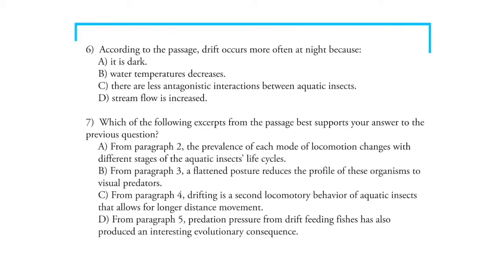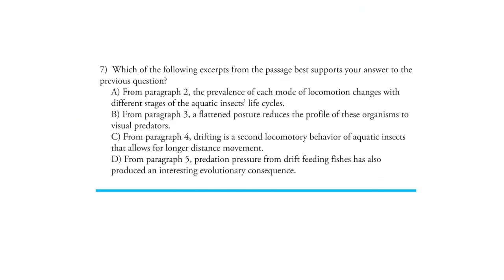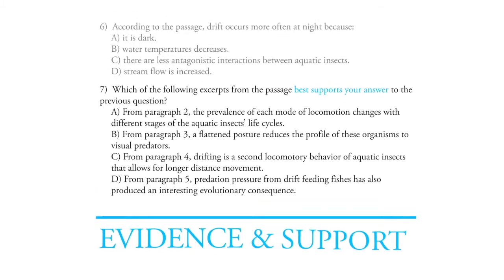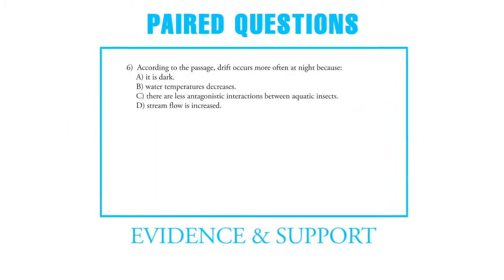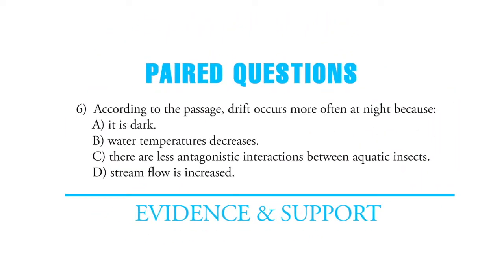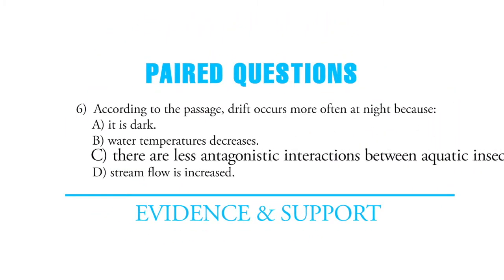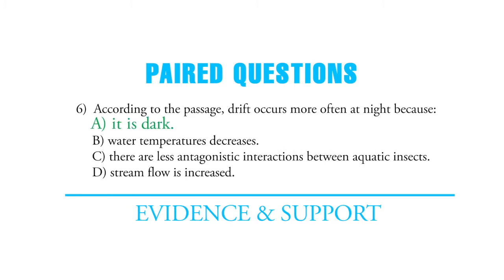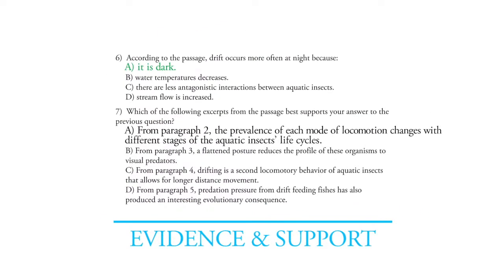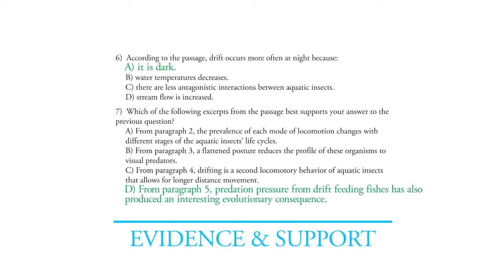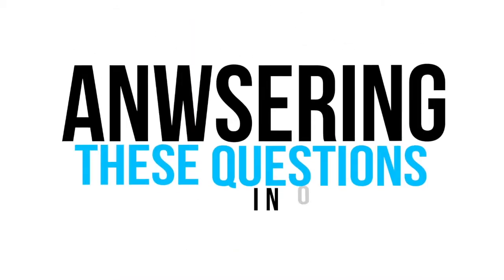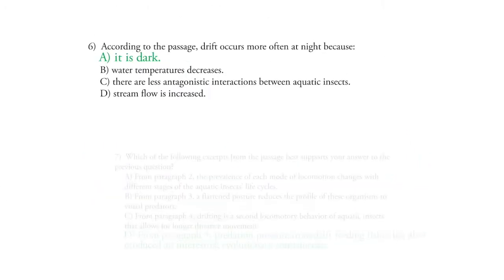Next, we're going to look at questions 6 and 7 together, because question 7 is asking you to select the best support for your answer to question 6. When you have these paired questions, you want to read the initial question and see if you know the answer. If you do, then select the answer and go to the next question to find which excerpt from the passage best supports your answer. So basically, you're answering these questions in order — number 6, then number 7.